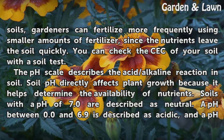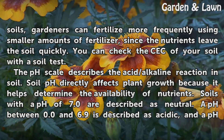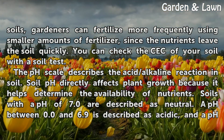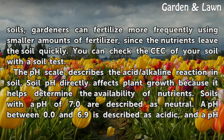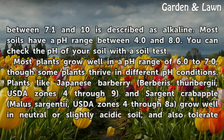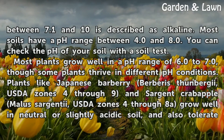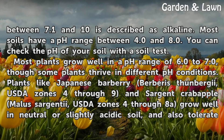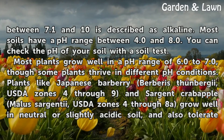You can check the CEC of your soil with a soil test. The pH scale describes the acid/alkaline reaction in soil and directly affects plant growth by determining the availability of nutrients. Soils with a pH of 7.0 are neutral; a pH between 0.0 and 6.9 is acidic, and a pH between 7.1 and 10 is alkaline. Most soils have a pH range between 4.0 and 8.0. You can check the pH of your soil with a soil test.